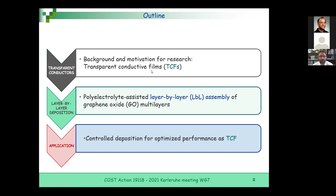That is the motivation — as a kind of small prototype we wanted to do. How we did it is by polyelectrolyte-assisted layer-by-layer assembly of graphene oxide particles, and by reduction of the particles we can controllably deposit carbon films with optimized performance as a transparent conductive material.